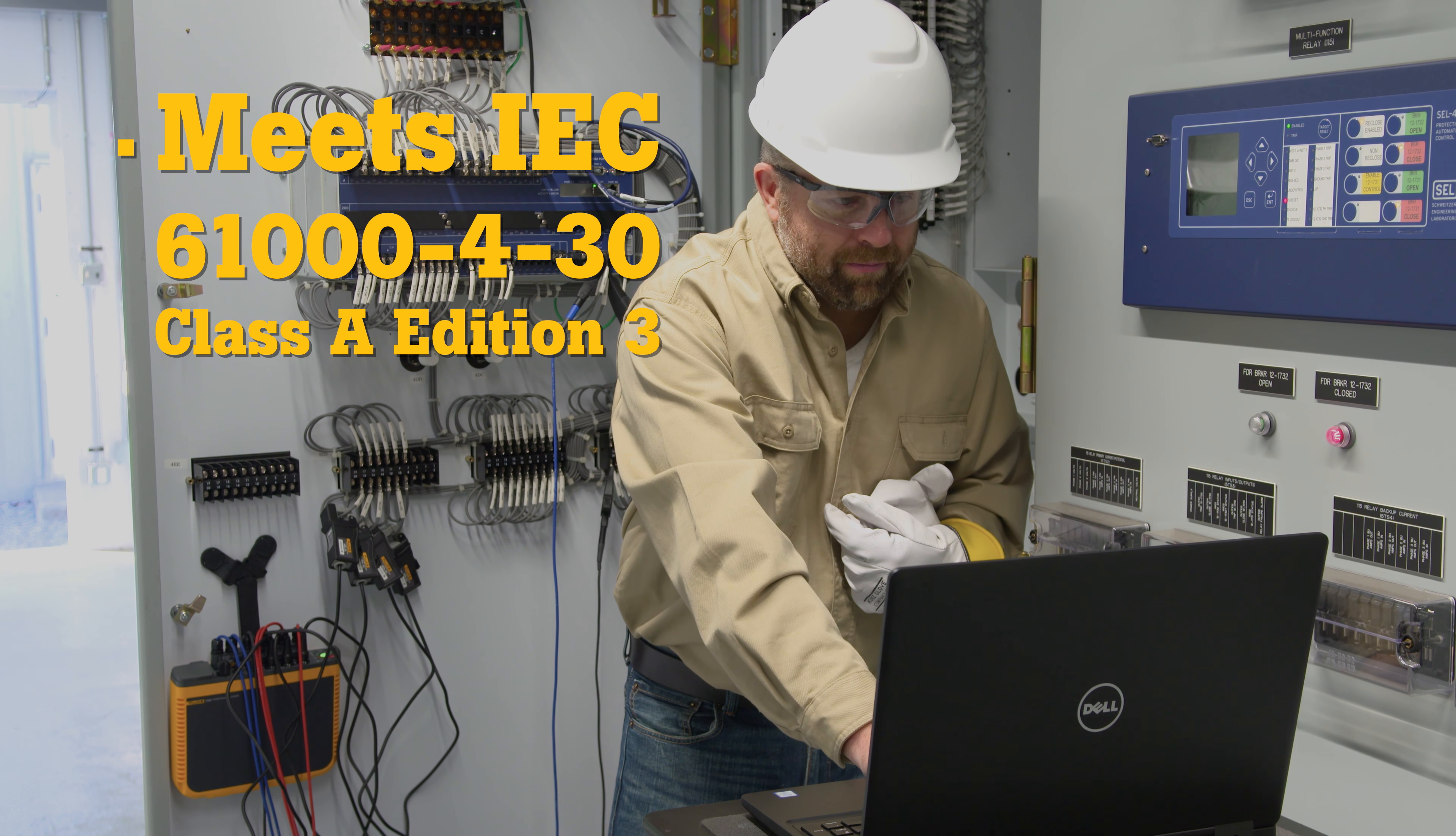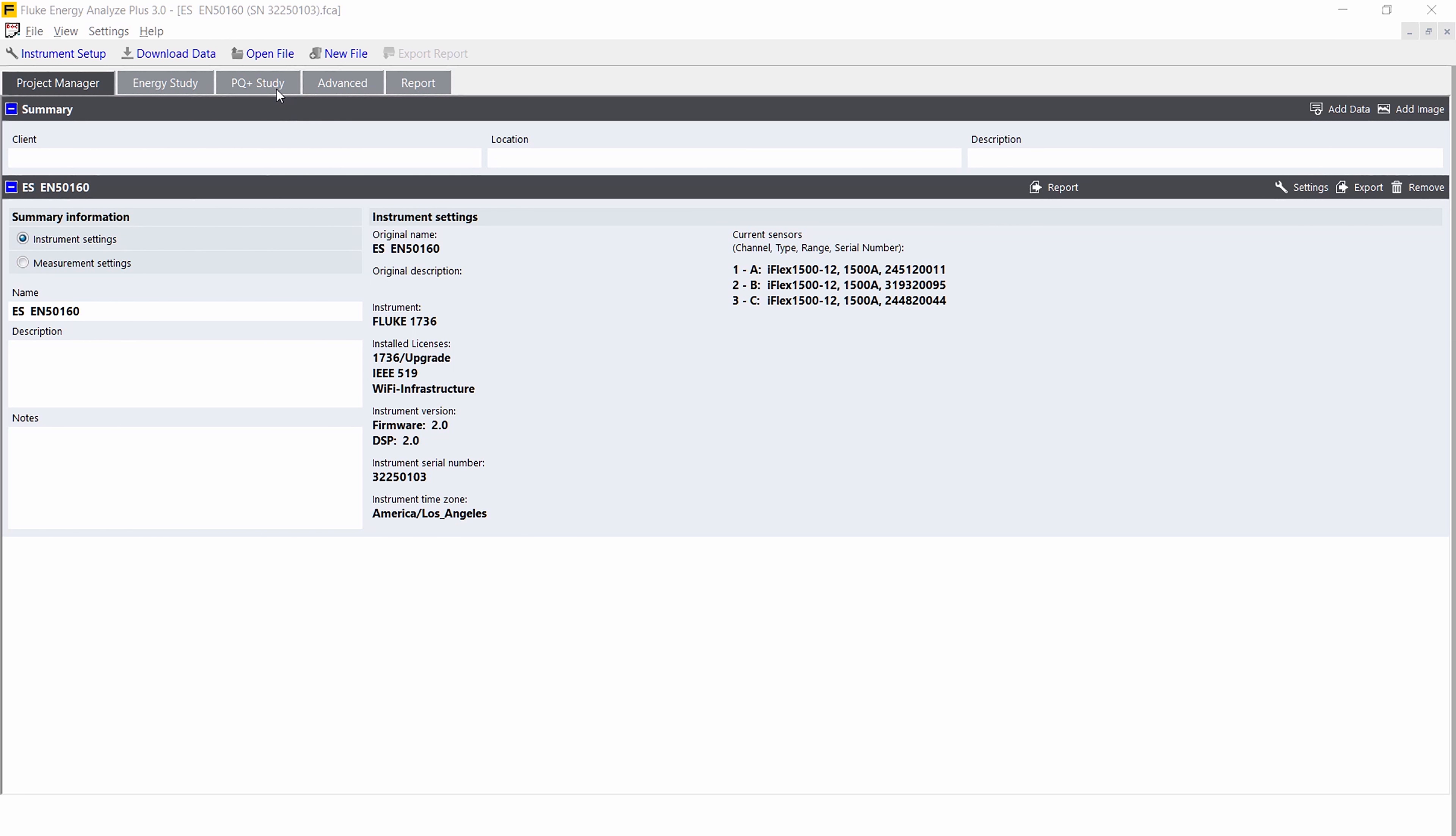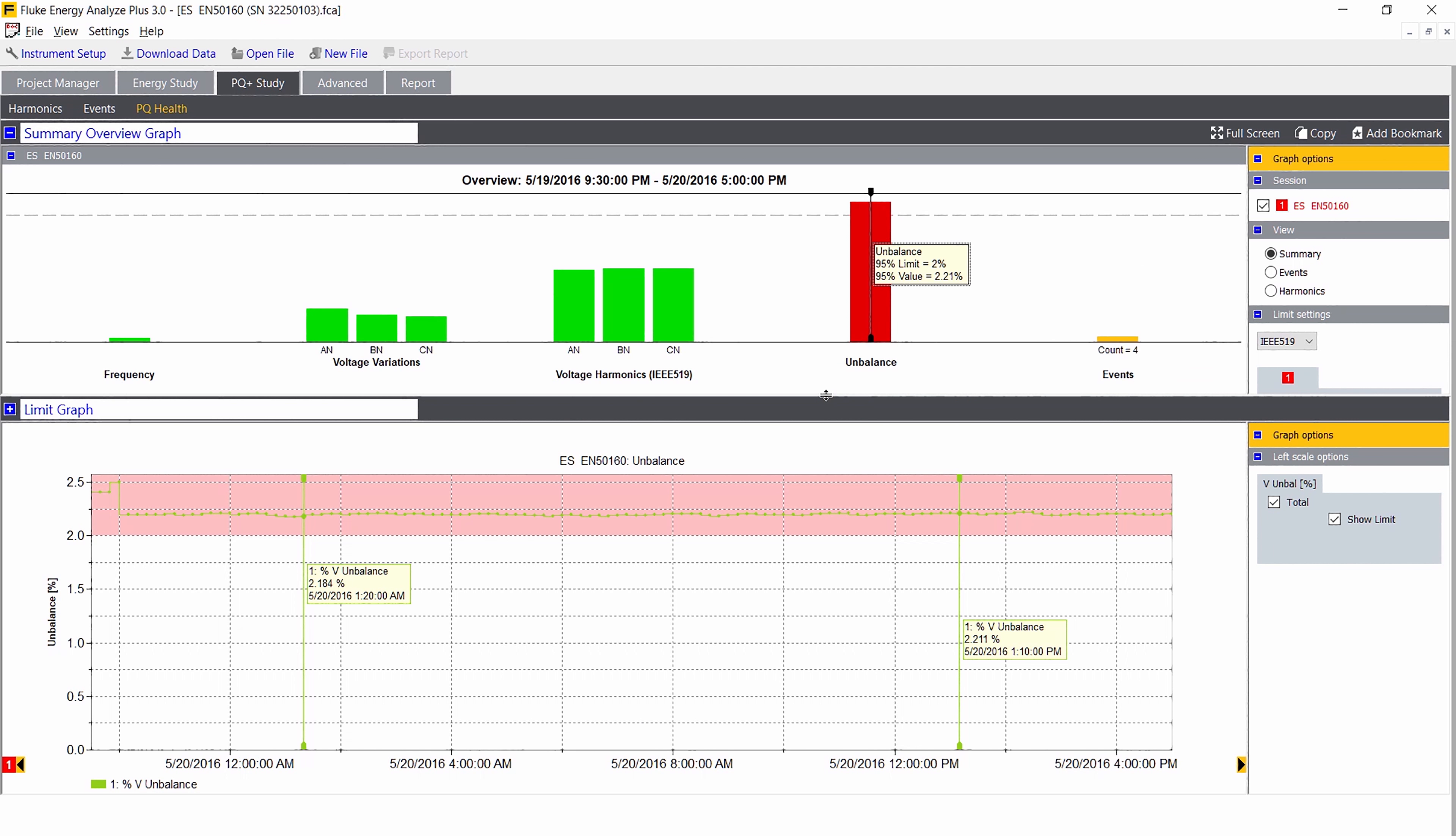The Class A standard defines measurement methods for each power quality parameter so you can obtain reliable, repeatable, and comparable results every time.